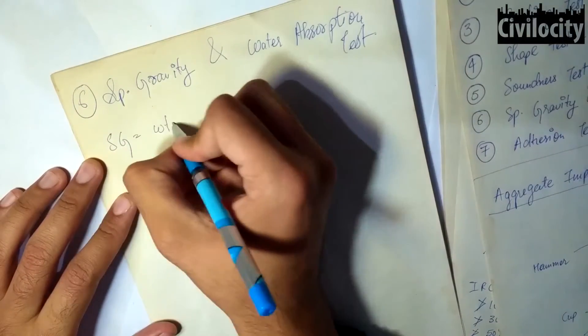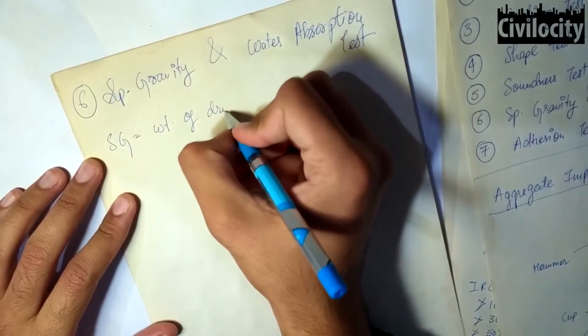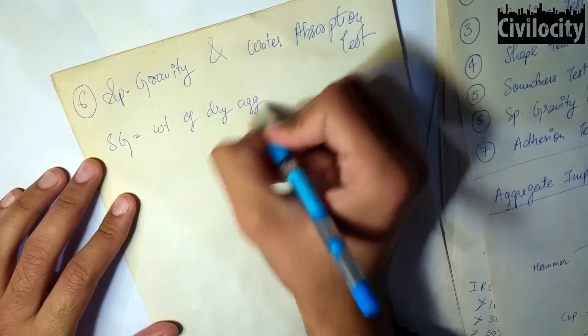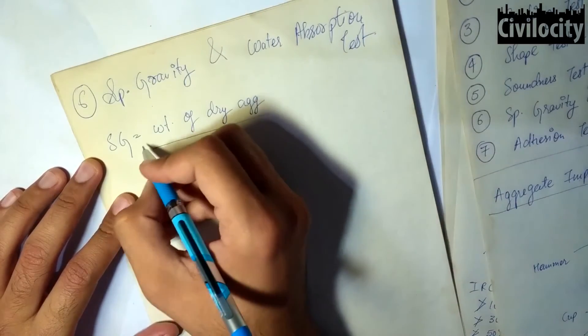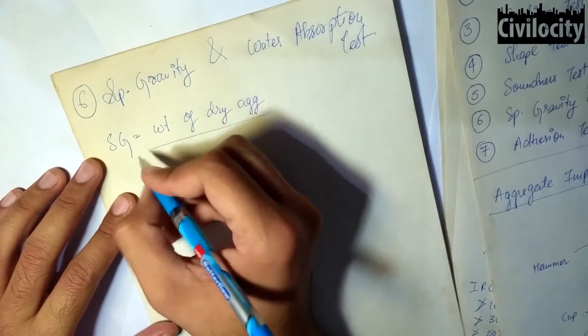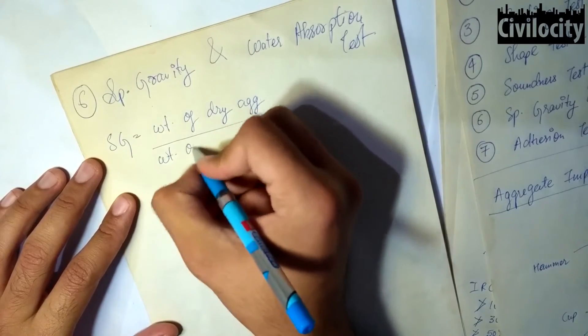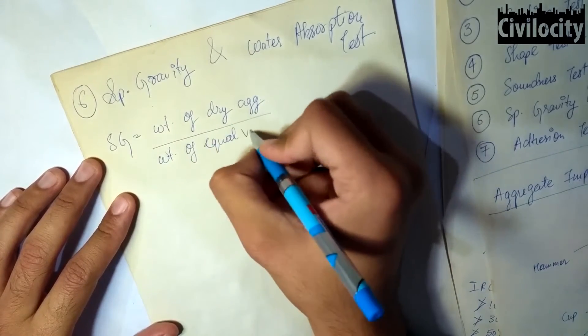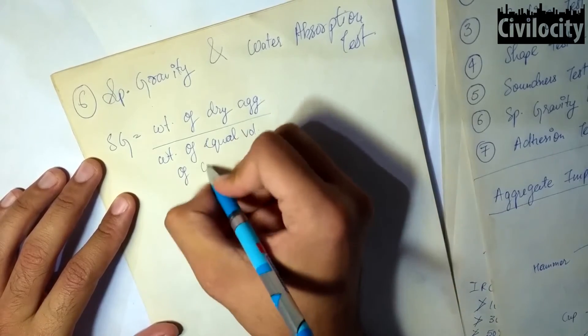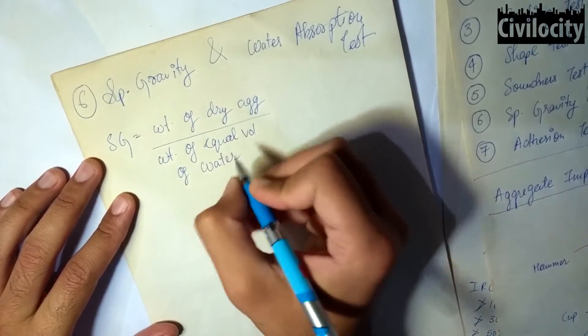First of all, the specific gravity is calculated by dividing the dry weight of the aggregate by weight of the equal volume of water. So specific gravity equals weight of dry aggregate divided by weight of equal volume of water.